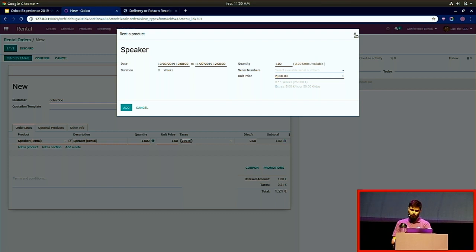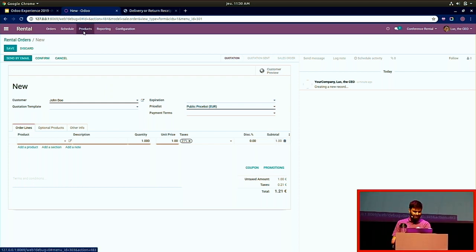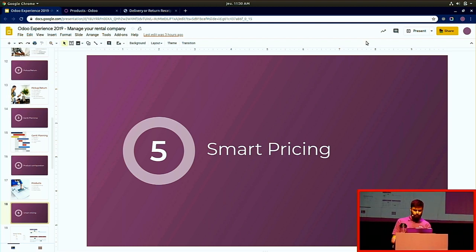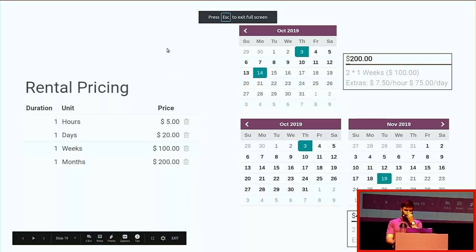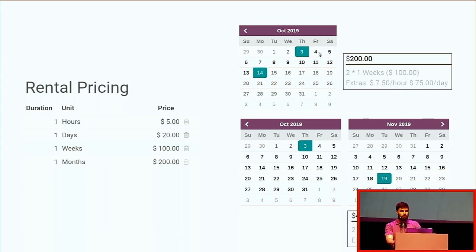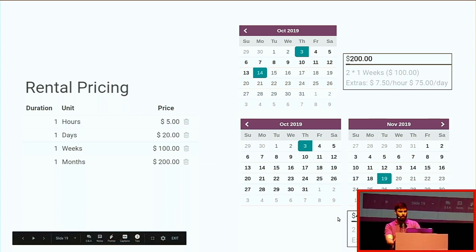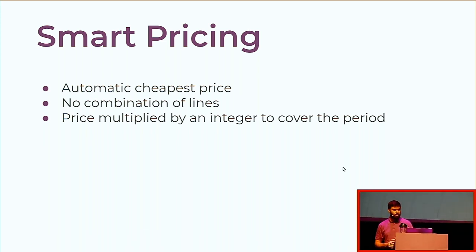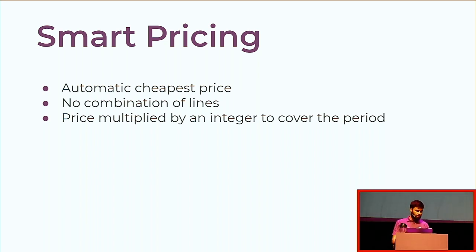It will always compute the cheapest price. For example, from the 3rd to the 14th it computes two weeks because that's cheapest. From the 3rd of October to the 19th of November it computes two times one month. It automatically takes the cheapest price with no combination of lines — it won't say 'one week plus two days.' The price is multiplied by an integer to cover the full period.